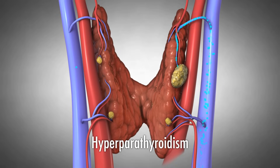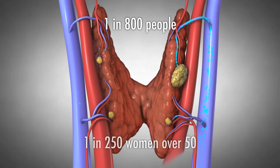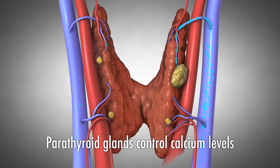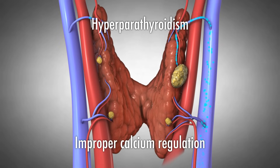Hyperparathyroidism is a disease of the parathyroid glands affecting 1 in 800 people during their lifetime and 1 in 250 women over age 50. Since parathyroid glands control the levels of calcium in our bodies, hyperparathyroidism is a disease of improper calcium regulation.